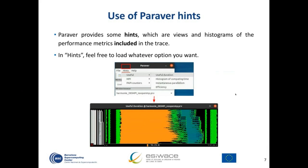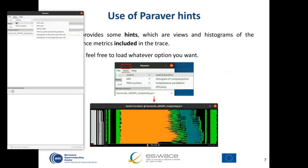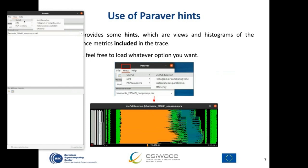For example, if you are not instrumenting OpenMP, it won't show OpenMP configurations. In this case, Parabert detects that you have MPI states, so it shows useful MPI configurations. It also detects PAPI counters such as instructions and cycles, and shows useful views for that information. It won't show views you cannot use. These hints provide basic configurations good enough for a first glance at your application's performance.